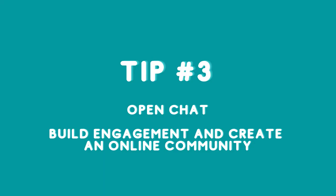Tip number three: open chat. A great way to build engagement. Open chat allows your audience to have a free-flowing discussion with each other. And while this feature is great for building an online community and allowing them to chat amongst each other, for sensitive topics, we recommend turning this feature off.